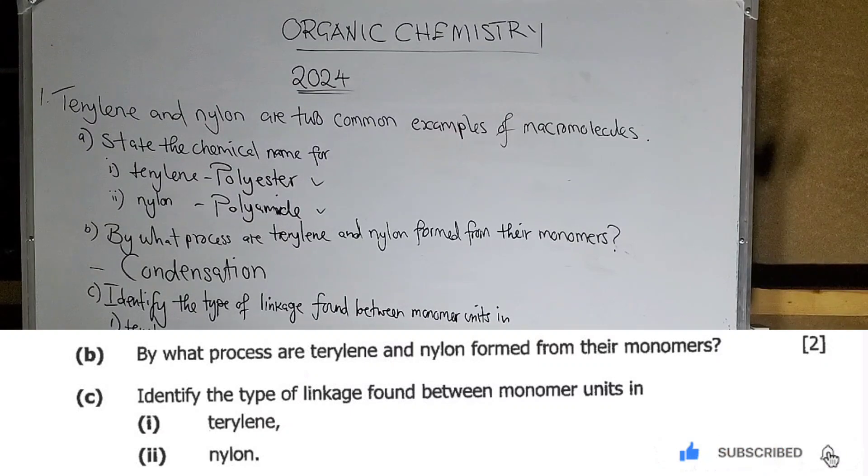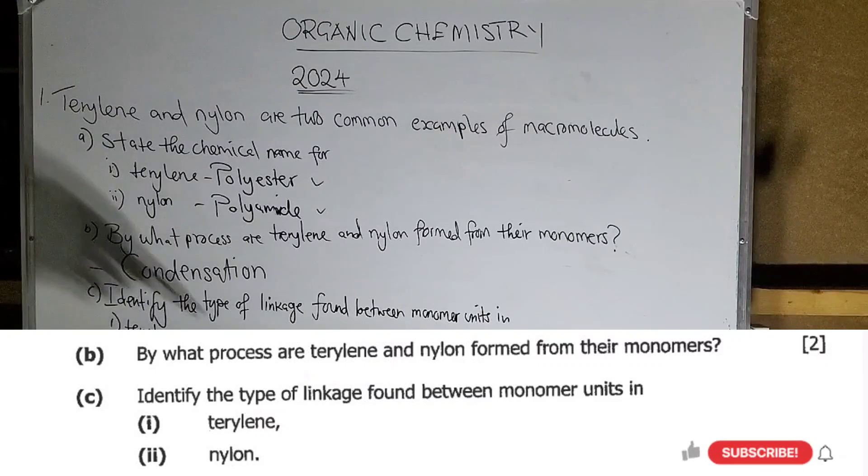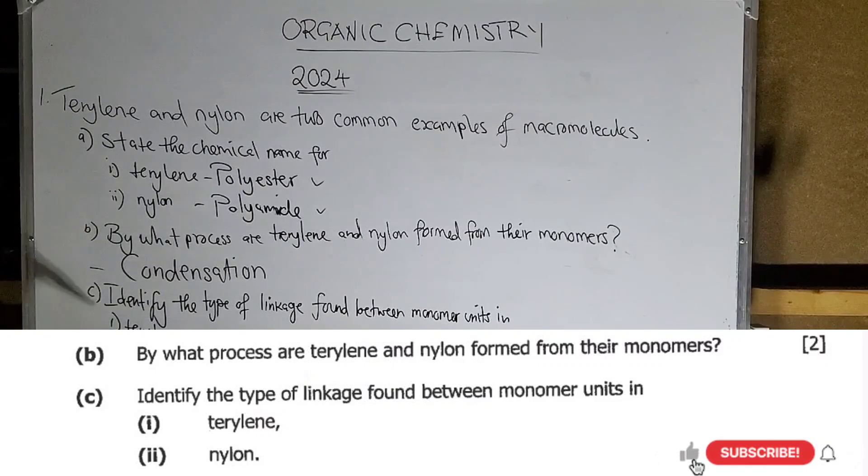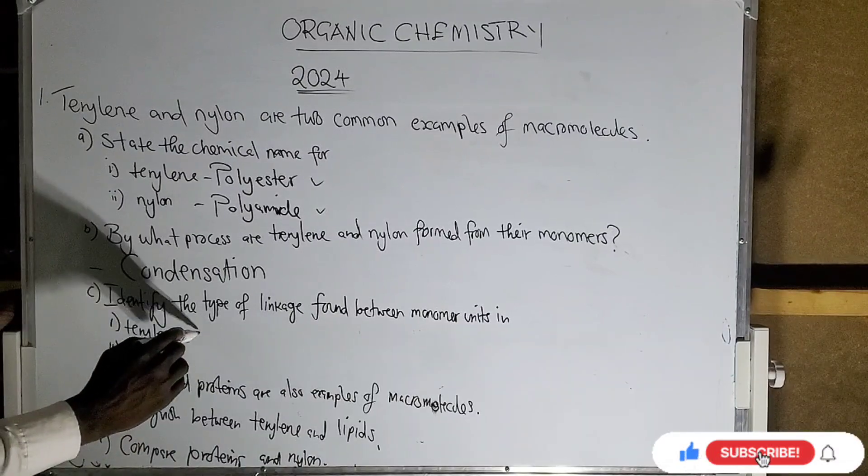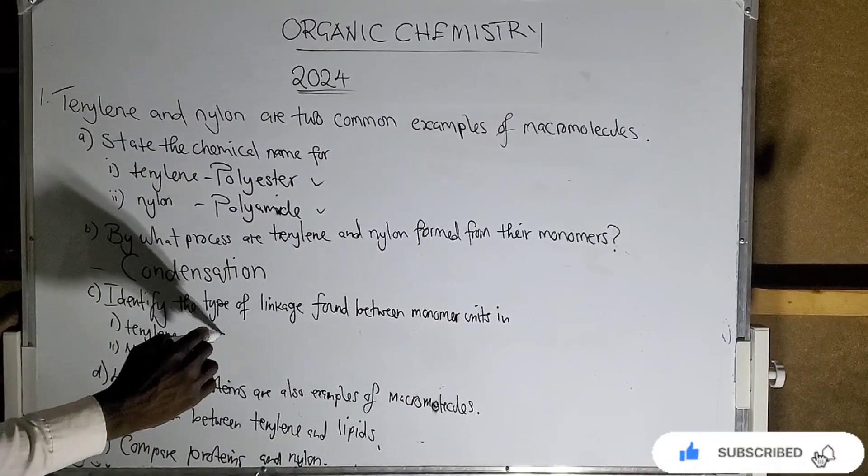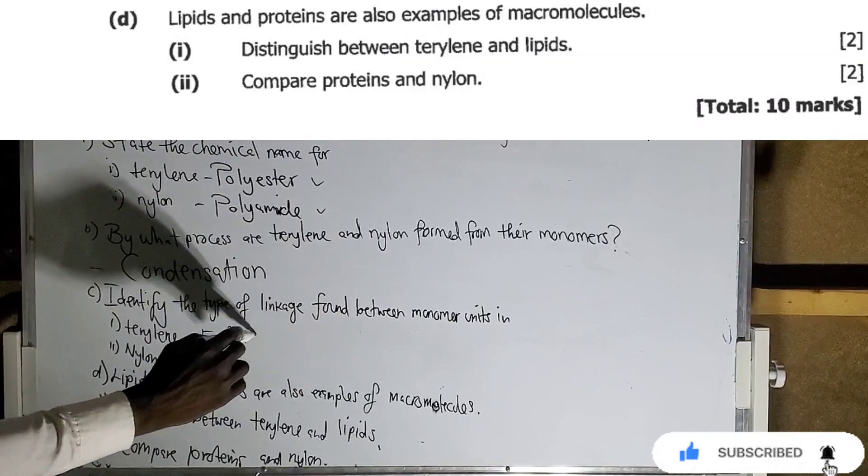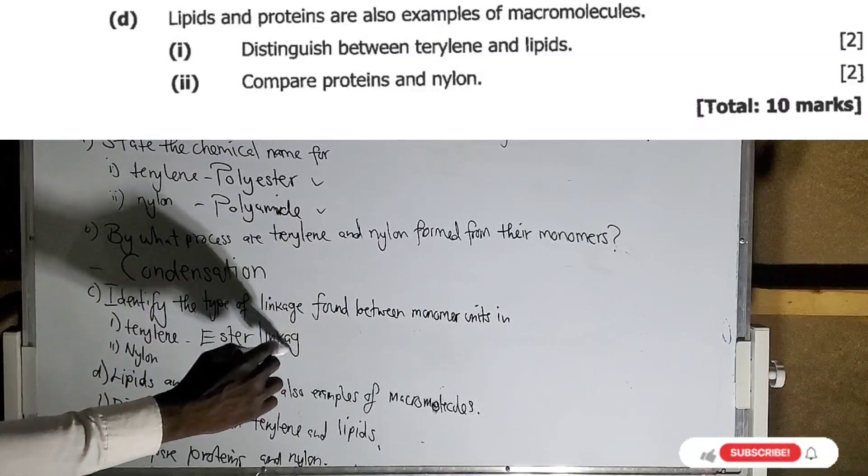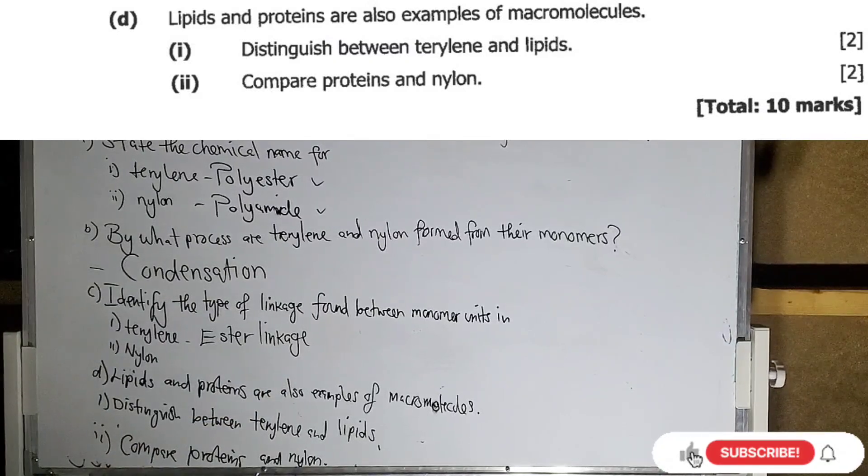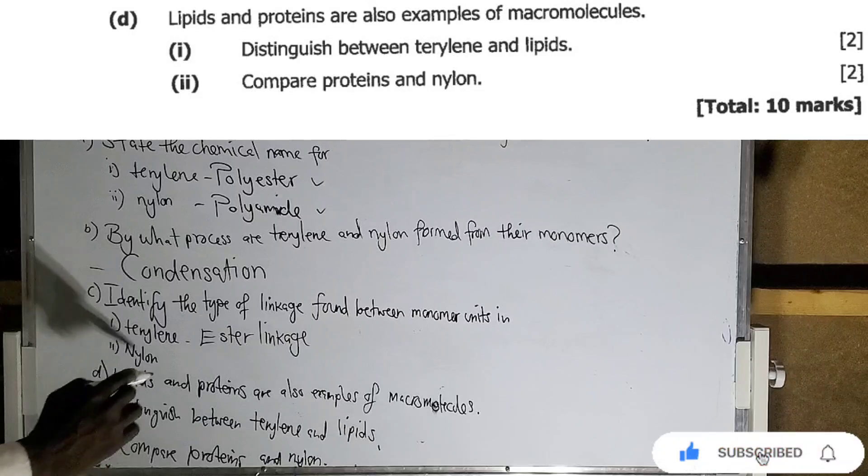Identify the type of linkage found between monomer units in Terylene. Since Terylene is a polyester, then the linkage is the ester linkage. Very simple, right?